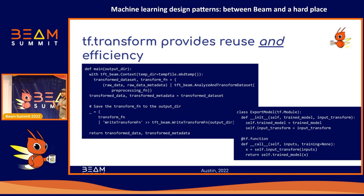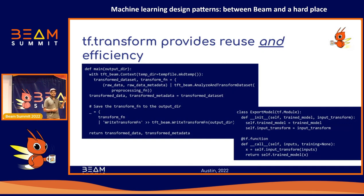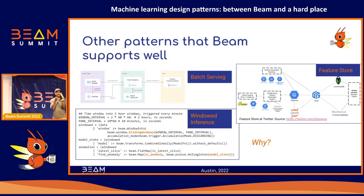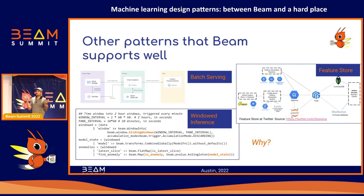DeepMind uses Beam quite a bit and Google Research uses Beam quite a bit. These hardcore ML enterprises using it means there are nice packages and nuggets available if you're using Beam. So there are quite a few design patterns that end up using Beam. One of them is batch serving — essentially what we call run inference — where you have an ML model and you want to run inference on thousands to millions to hundreds of millions of examples.